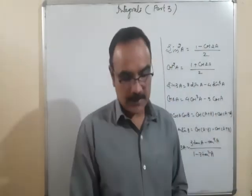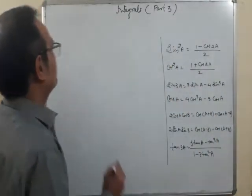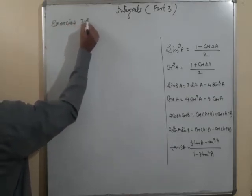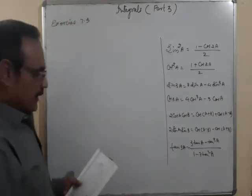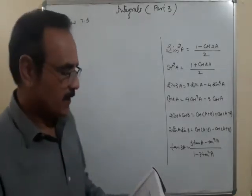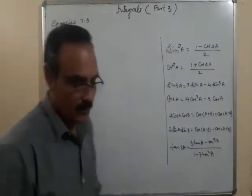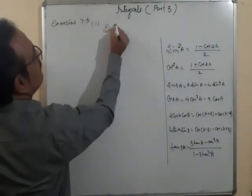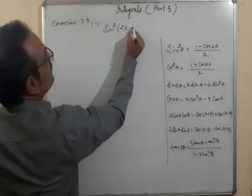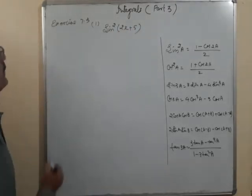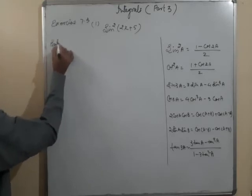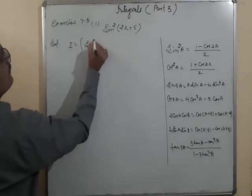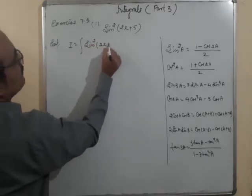Now coming to Exercise 7.3, which is fully based on trigonometric identities. Question number 1: integrate sin²(2x+5). So I = ∫sin²(2x+5) dx.